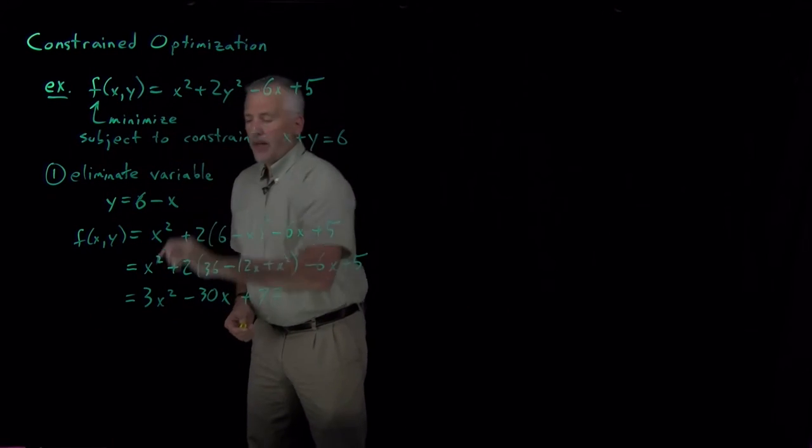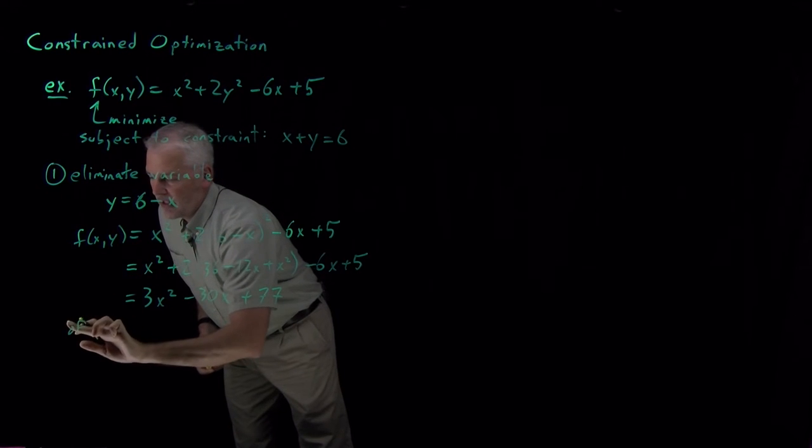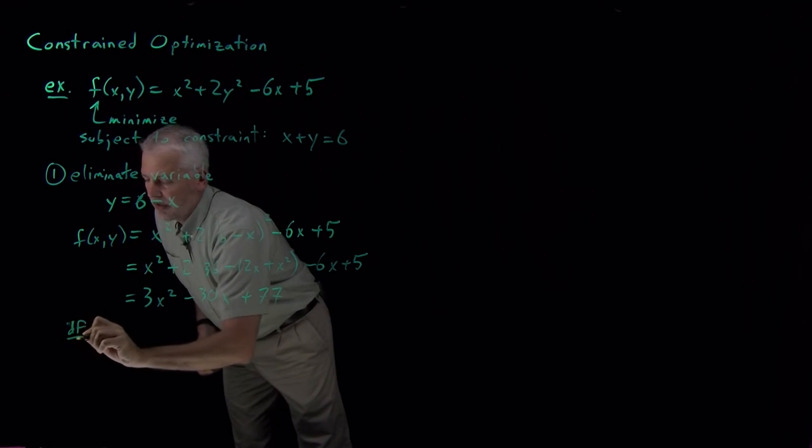So that's just rewriting my constrained original equation. Of course, what we're aiming to do is minimize the function, take the minimum, find the minimum of that function.